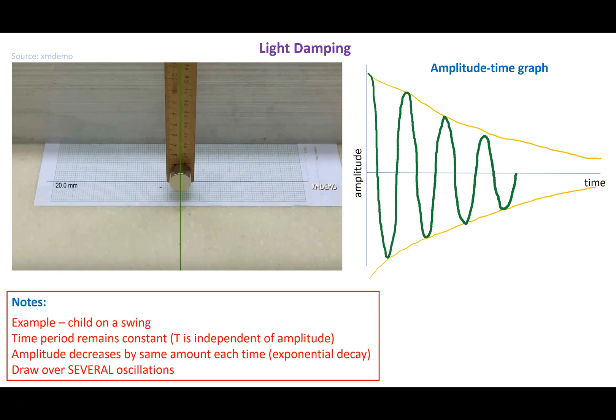Now, there are different types of damping. The most common type of damping that you are likely to see, and this would include something like a pendulum left swinging or a child on a swing, is called light damping. In light damping, over time, the amplitude of the oscillation is decreasing. In fact, it's actually decreasing by the same amount or percentage each time - it's an exponential decrease. But the time period, the time for one complete oscillation, remains the same.